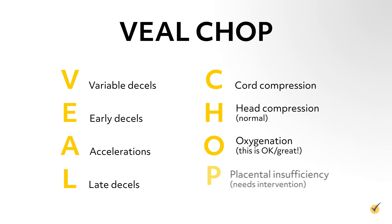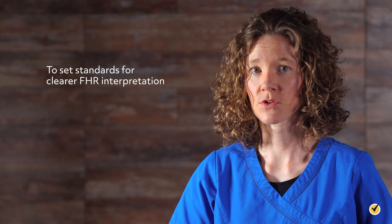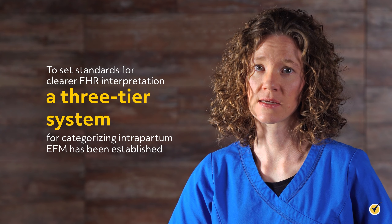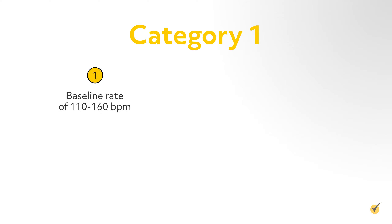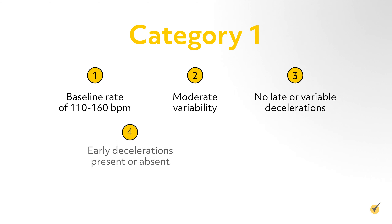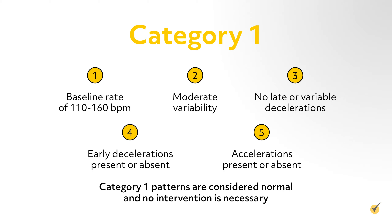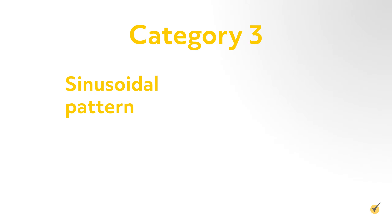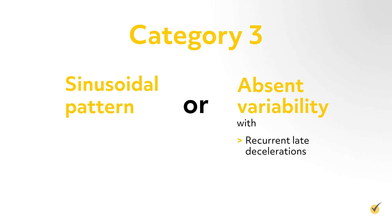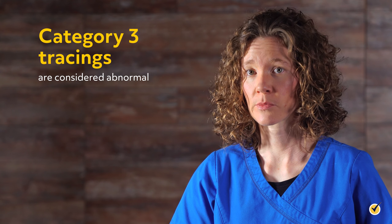Variable decelerations are an abrupt decrease in fetal heart rate with a rapid downslope and variable recovery phase. The duration and timing is usually variable and may or may not be in relation to the uterine contraction. Variable decelerations are caused by umbilical cord compression and are the most commonly seen patterns during labor. Variable decelerations generally have a favorable outcome; however, a persistent pattern may lead to fetal distress and is therefore non-reassuring. Prolonged decelerations last longer than 2 minutes but less than 10 minutes; longer than 10 minutes would be considered a baseline change. Prolonged decelerations can be caused by cord compression, head compression, or utero-placental insufficiency. Whether or not the deceleration is non-reassuring depends on the status and response of the fetus after the deceleration has ended.